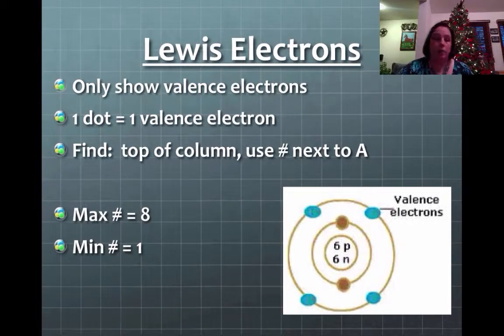Now, for any Lewis dot diagram, the minimum amount you can have is one and the maximum amount you can have is eight. So, at the very most, you're only putting eight dots around your symbol.